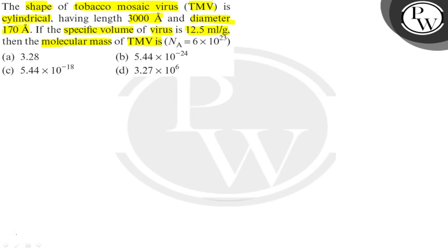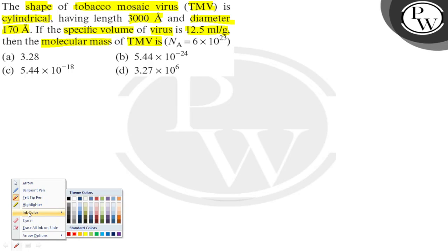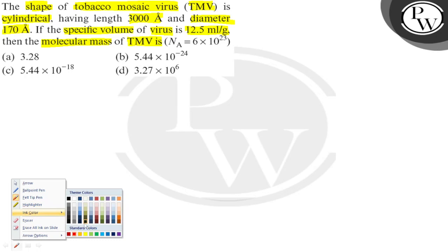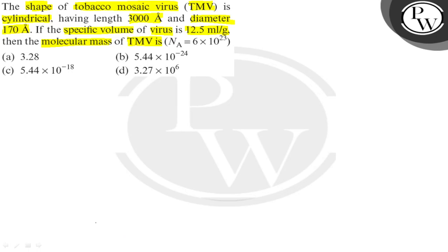Tobacco mosaic virus, which is cylindrical in shape. Its dimensions — length and diameter — are both given. Its specific volume is given. We need to find the molecular mass of the virus. First, let us find the volume of one virus.